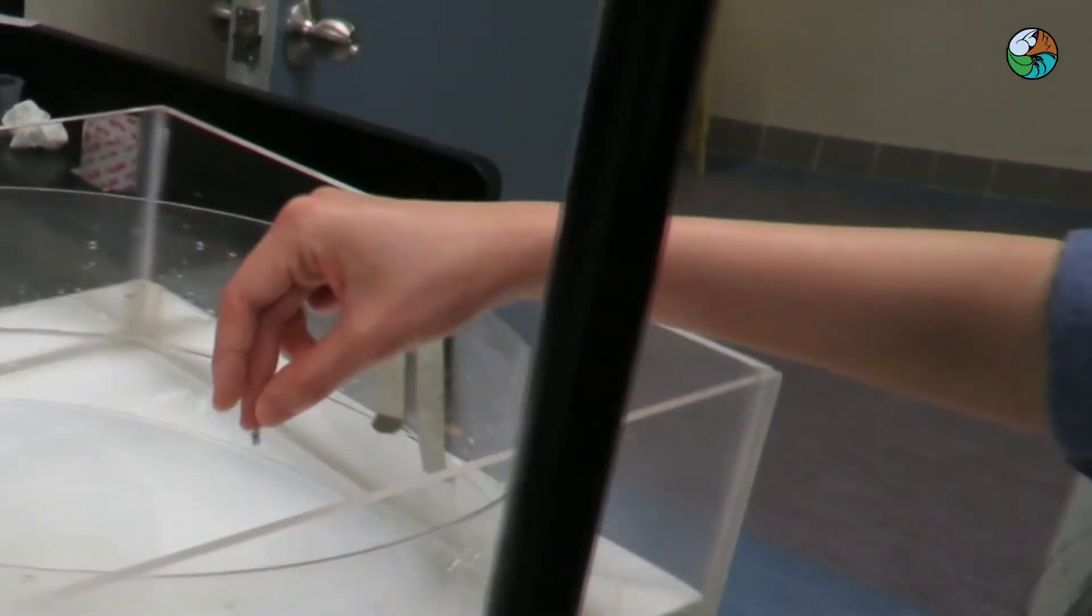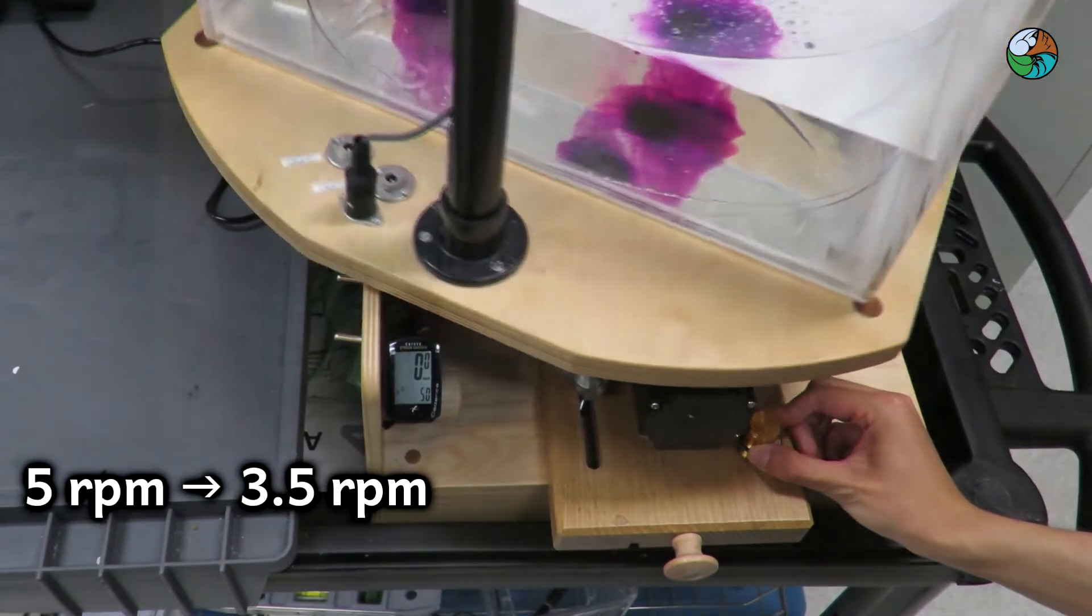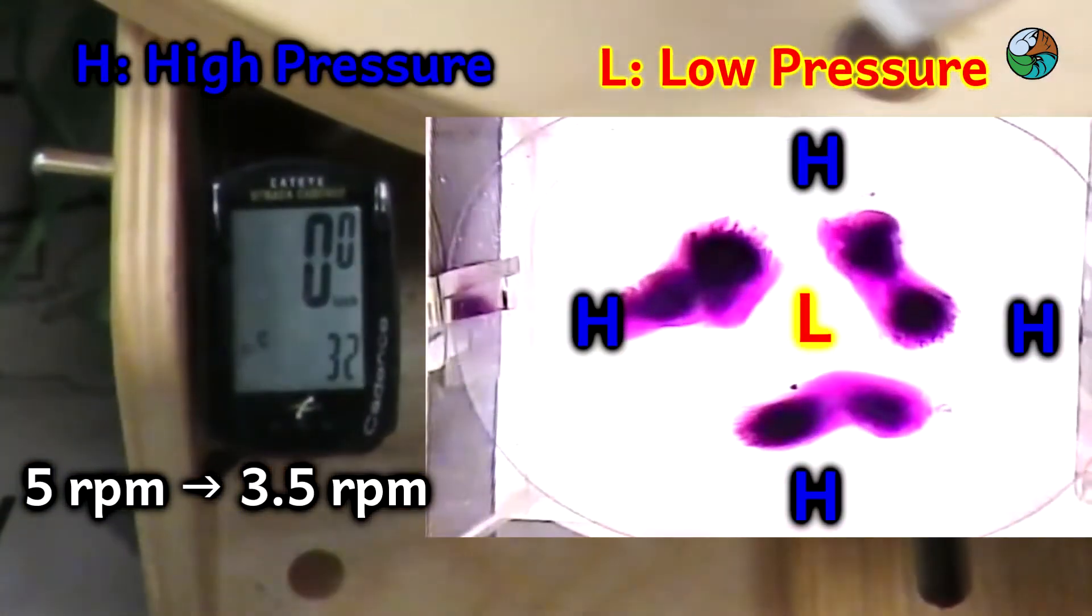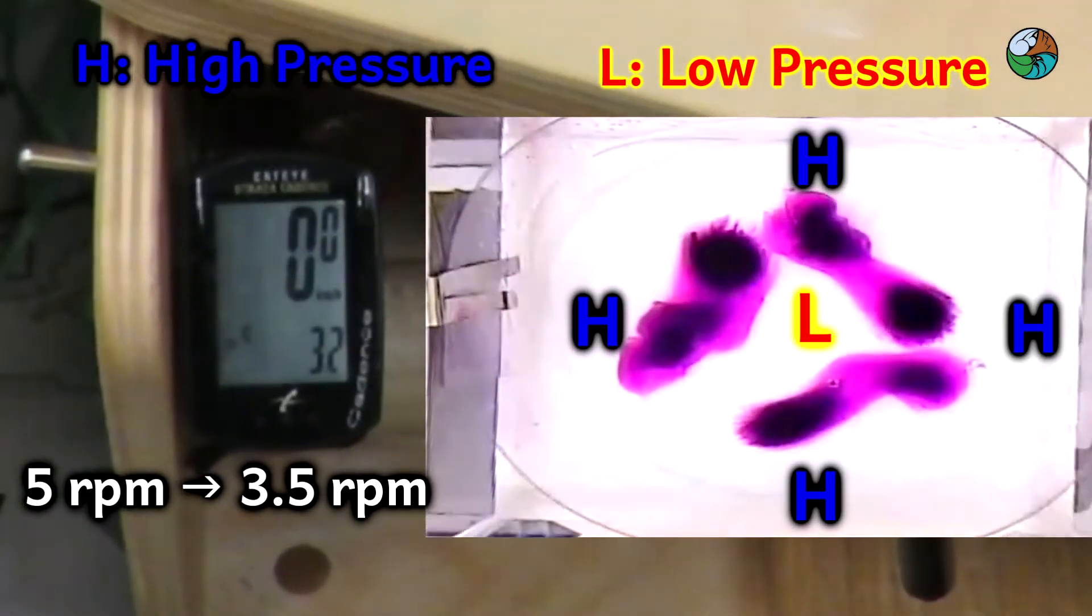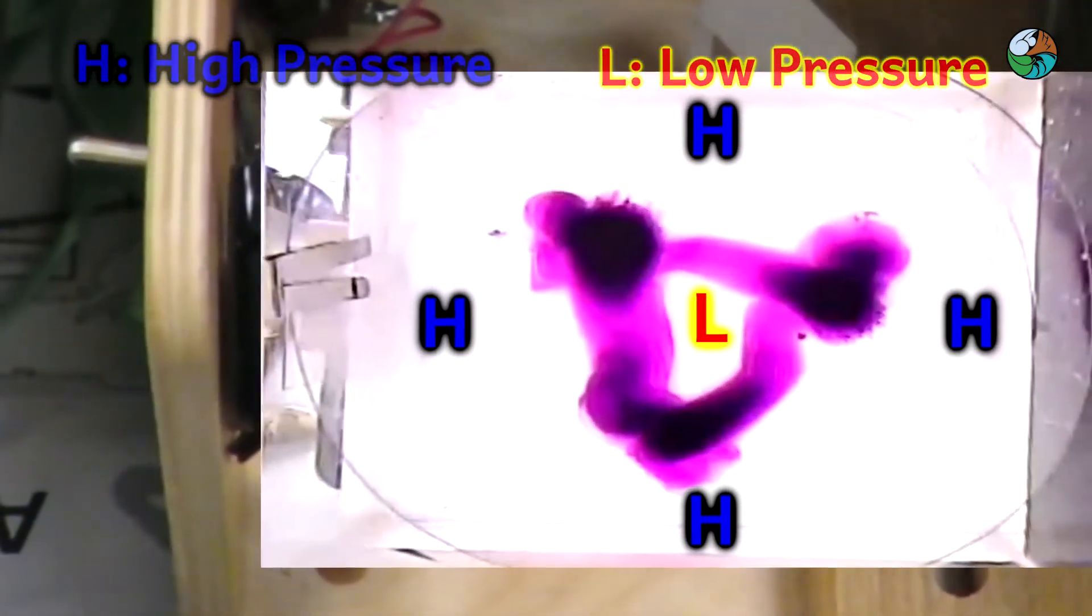Paper dots are also added to reveal the surface flow. Now, slightly reduce the rotation rate to induce a lower pressure at the center and a higher pressure at the rim of the tank. Observe both the surface flow and the flow at the bottom.